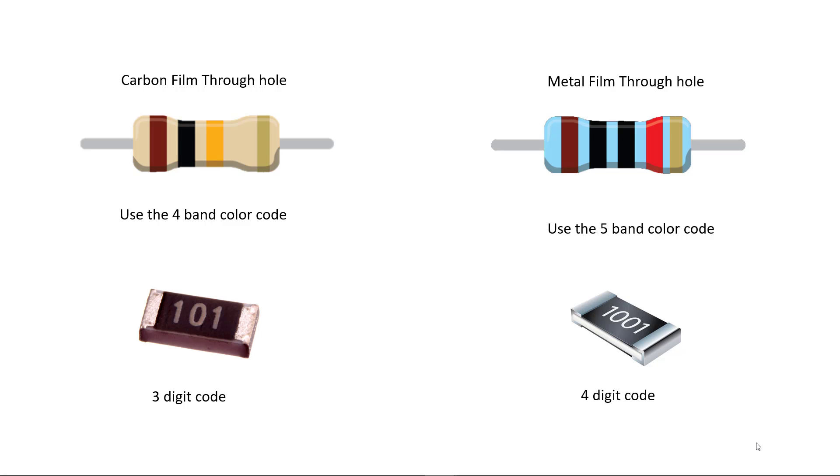Well, through-hole carbon resistors use the 4-band color code, through-hole metal film use a 5-band color code, and surface-mount resistors most commonly use a 3-digit or 4-digit code.